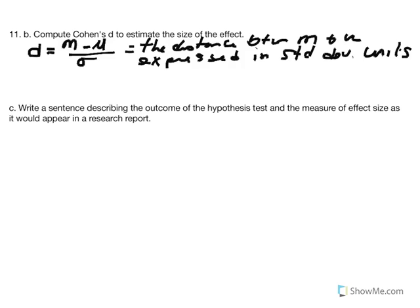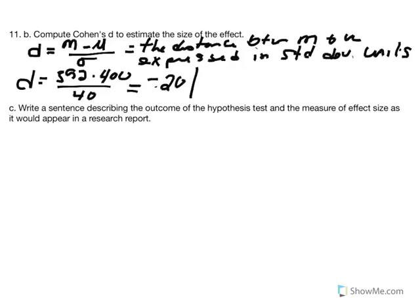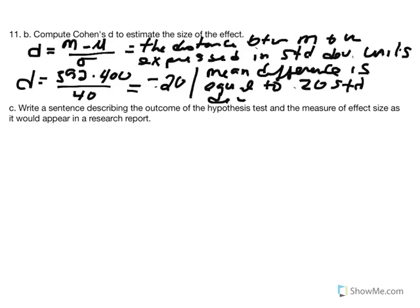Cohen came up with this statistic to minimize the effects of increasing n. We've seen that increasing sample size affects standard error and impacts the z value — larger n decreases standard error, which increases our z value. This helps prevent drawing conclusions based on a large n and keeps focus on the effect size: the difference between sample mean and population mean.